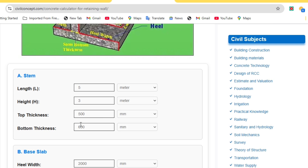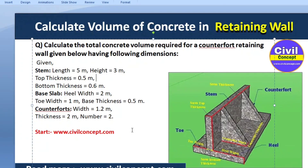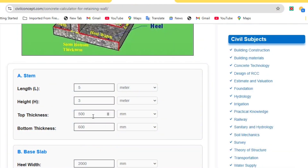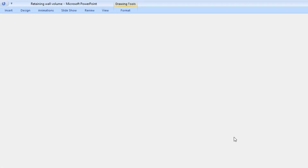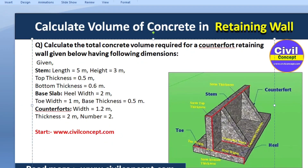If you have a different unit you can use mm or inches. Top thickness is 0.5 meters and bottom thickness is 0.6 meters. In some cases the retaining wall may have the same thickness at the top and bottom — both could be 0.5 meters — but in this case top thickness is 0.5 meters and bottom thickness is 0.6 meters.